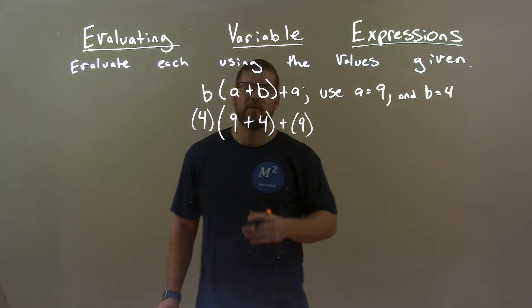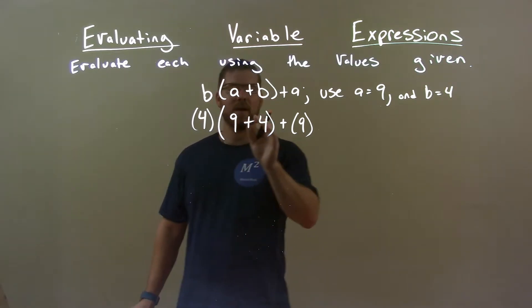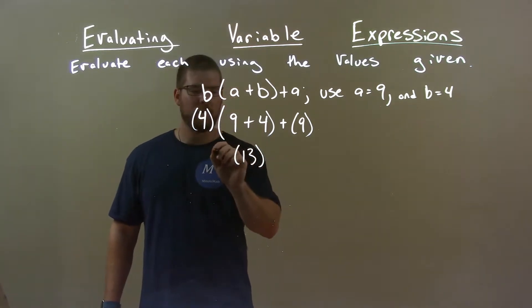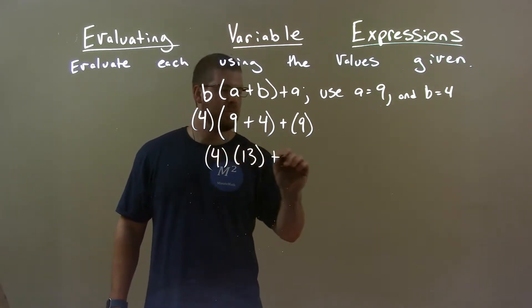So simplify what's in the parenthesis first. 9 plus 4 is 13, so we have 13 here. Bring down the 4 and the plus 9.